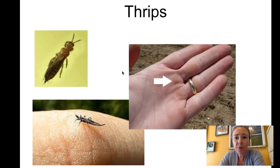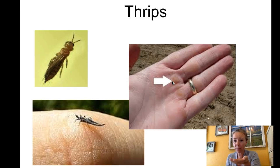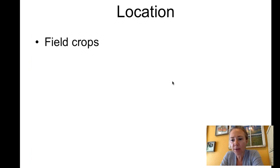Thrips can go from your field into a controlled environment and vice versa. They're super tiny and able to get into even greenhouses — special screens are made to put in front of louvers to keep them out. They're practically microscopic. The best way to scout for thrips is to go to flowers, since they love chewing on pollen and nectar inside flowers, which can damage fruit production. I'll typically take a piece of white or yellow paper and tap the flower — if they fall out, you can see them as little black specks.